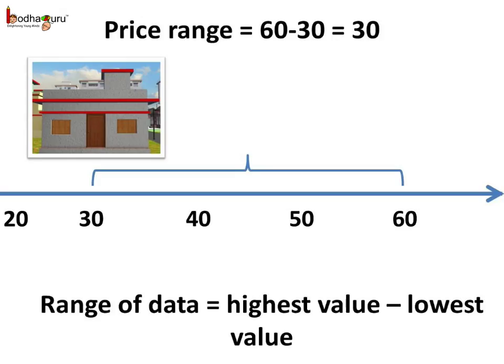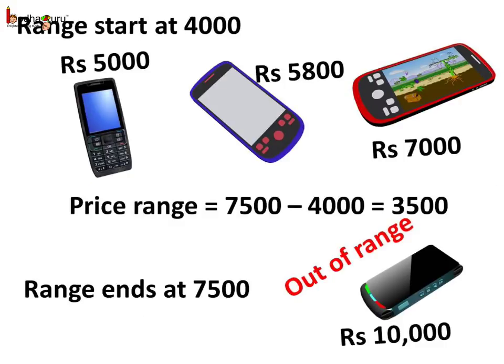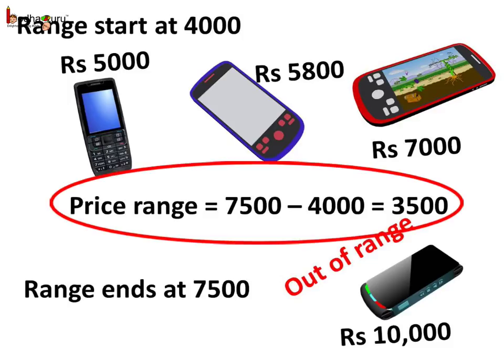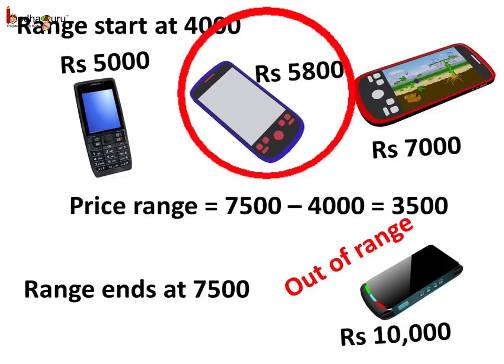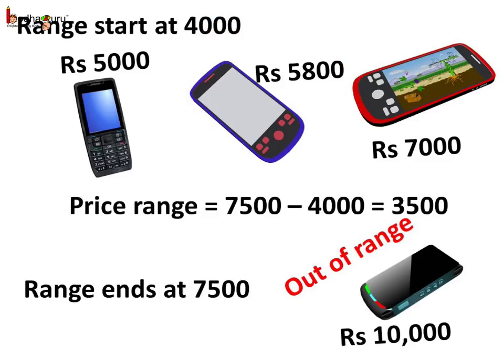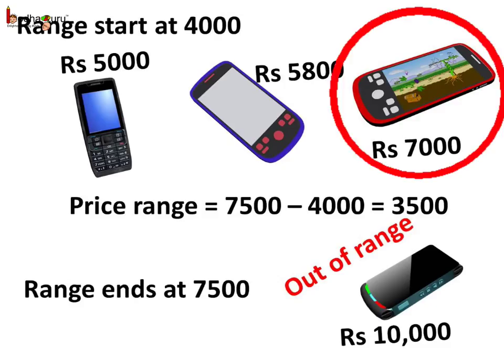So to find the range, we do: highest value minus the lowest value. Another example — when you go to buy a mobile, set the price range first. Like, a mobile less than 4000 rupees doesn't have the required features, but you cannot afford more than 7500 rupees. So the price range is 7500 minus 4000, which is 3500. The range starts from 4000. You could choose a mobile of rupees 5000, a 5800 rupees phone with good sound, or a 7000 rupees phone with a great camera.